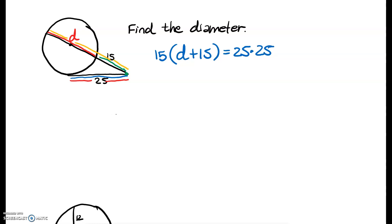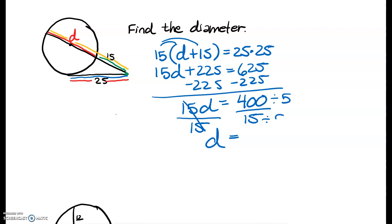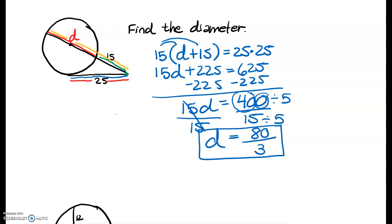That's going to equal the outside part, which is 25, times the whole thing, which is 25. The outside and the whole thing is 25. So we're going to distribute: 15 times the diameter, and 15 times 15 is 225. Subtracting 225 from both sides, we get 15D equals 400. Dividing both sides by 15, I can take out a 5 from each — 15 divided by 5 is 3, and 400 divided by 5 is 80. So the diameter happens to be 80 over 3.